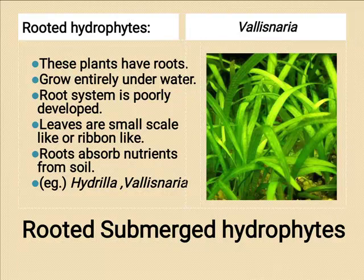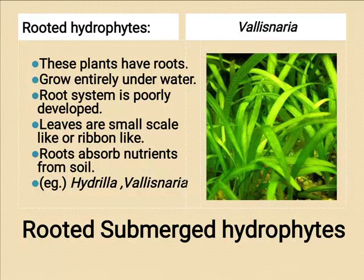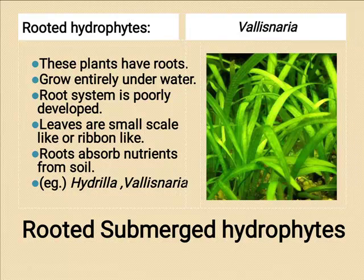Vallisneria has an interesting pollination mechanism. The unisexual staminate flowers break off from the inflorescence and rise to the water surface, floating on the water. The pistillate flowers elongate and reach the surface of water where they remain until pollinated. After fertilization, the scape shortens and the developing young plant completes its development underwater.